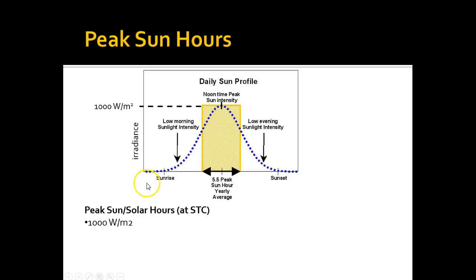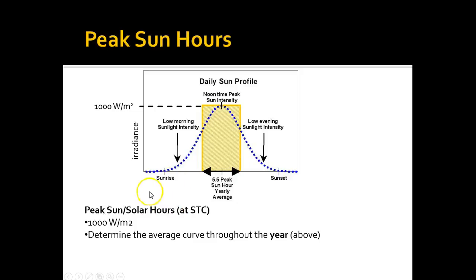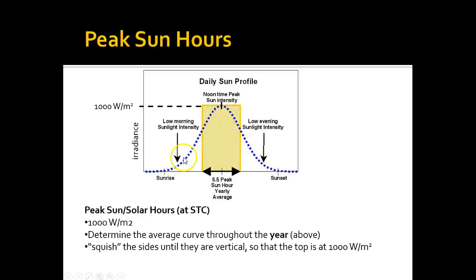So 1,000 watts per meter squared is what we're looking at. Imagine that 1,000 watts per meter squared is right here on the chart. If all we had was the curve — and remember, this is an aggregate curve of every day throughout the year in an average meteorological year, so average weather conditions throughout the year — we're looking at how many equivalent hours this curve represents at 1,000 watts per meter squared. You sort of squish the sides in so they turn vertical, and at the top should be 1,000 watts per meter squared. So all of the area under the curve fits into this box.